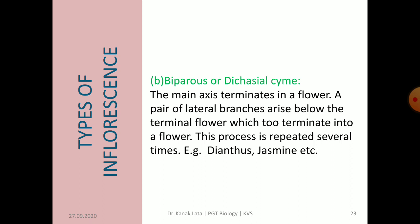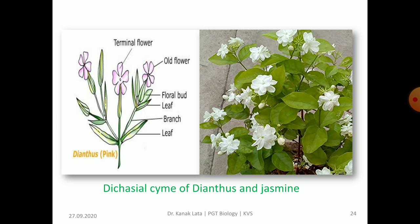The next type of cymose inflorescence is biparous or dichasial cyme. Here also the main axis terminates into a flower, and a pair of lateral branches arise below the terminal flower. Further, the lateral branches also terminate in a flower, and this process is repeated several times. A common example is seen in Dianthus and jasmine. In the given figure, you can observe the dichasial cyme of Dianthus and jasmine.